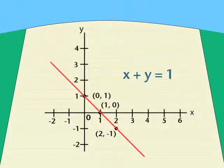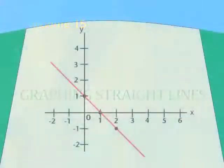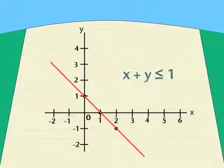Was any of this unclear? If so, review the module on graphing straight lines before you continue with this module. Handling the expression as an equation is easy — that's old stuff. But it's really an inequality. How do we graph that?